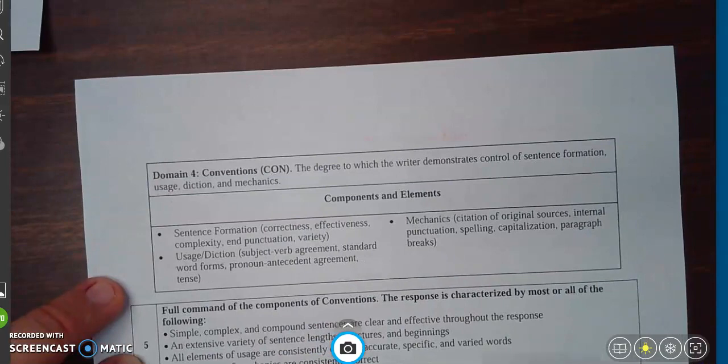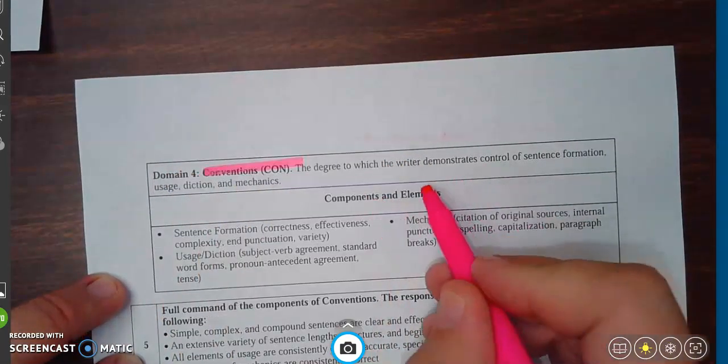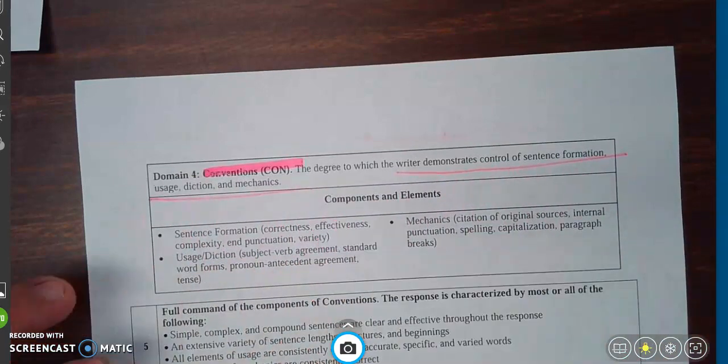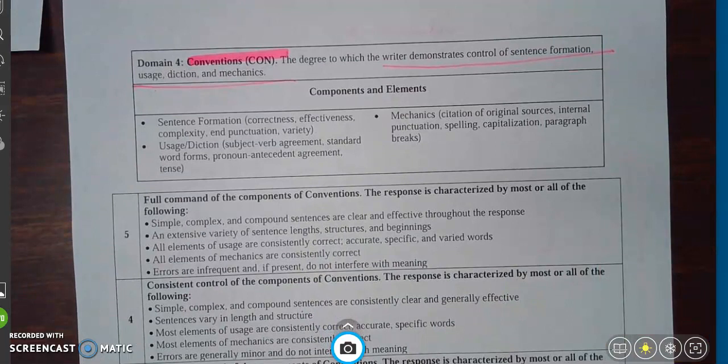Domain four is the conventions. And it's all of those. The idea that it's not interfering with the reader's ability to understand what you're trying to say. Sentence variety, grammar usage, mechanics, et cetera.